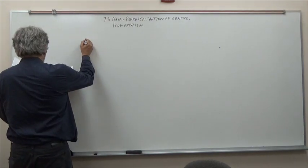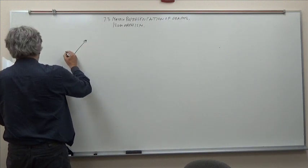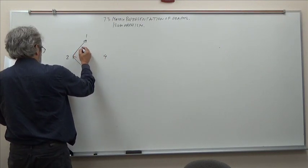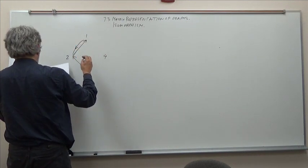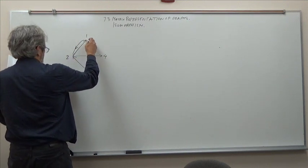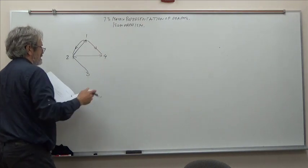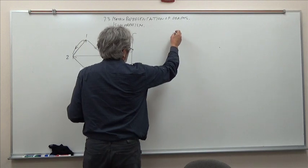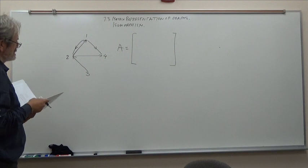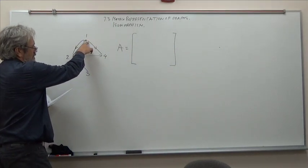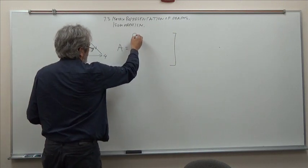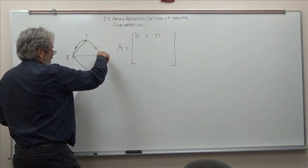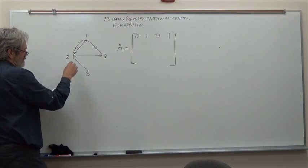Here is the way to connect matrices with graphs. I'll give an example. This graph has vertices 1, 2, 3, 4. There is an arrow from 2 to 1, an arrow from 2 to 4, and an arrow from 1 to 4. Since we have four vertices, we will make a matrix representing this graph. The matrix records in entry i,j the number of arrows going from node i to node j. So 1 going into itself is none, 1 going into 2 there is 1 arrow, 1 going into 3 is 0, 1 going into 4 is 1.